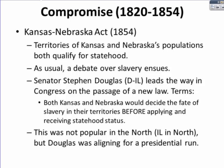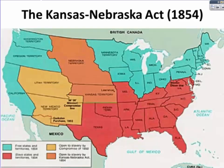This was not popular in the North — Illinois happens to be in the North. But Stephen Douglas was positioning himself for a presidential run, and any Democrat who wanted to run for president in the 1850s would need the support of southern states. Here is a map of the Kansas-Nebraska Act, showing the Kansas and Nebraska territories in orange.